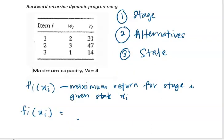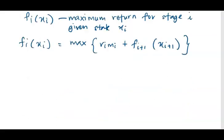So f_i(x_i) will be the maximum of r_i * m_i, where r is the revenue for the item and m_i is the number of units of item i that we put in the knapsack. That is the revenue, plus the optimal feasible solution from another stage. This is the function that links all the stages, and it is easier if we can change x_{i+1} into x_i so that it is more consistent with the left-hand side.